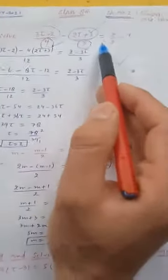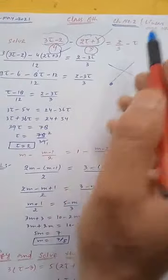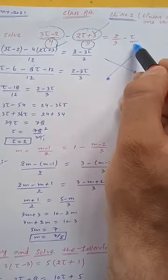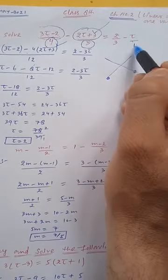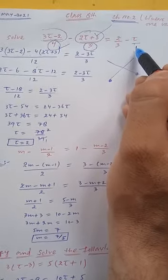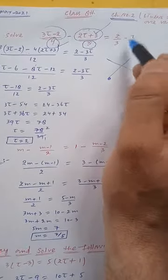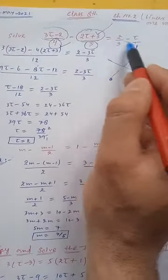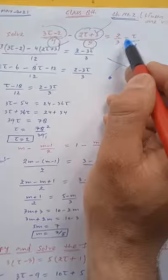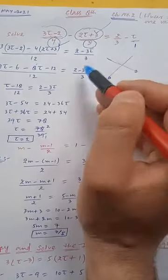Is equal to, similarly here we can do cross multiplication by writing t/1 because there is nothing in the denominator. We can write t/1 because it doesn't affect this value. So 2 × 1 is 2, minus is there, 3 × t is 3t, divided by 3 × 1 is 3.